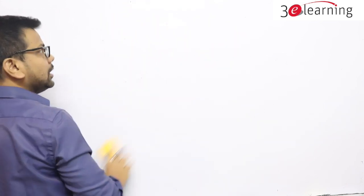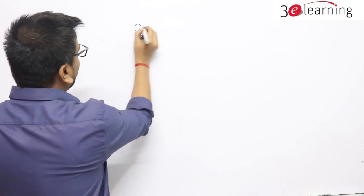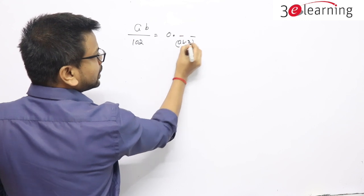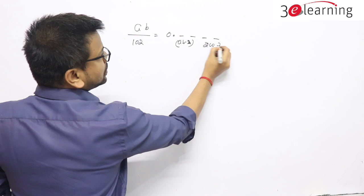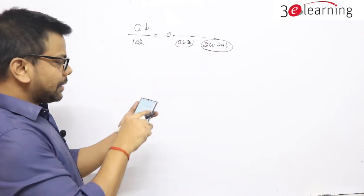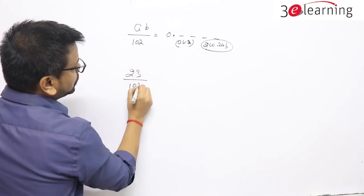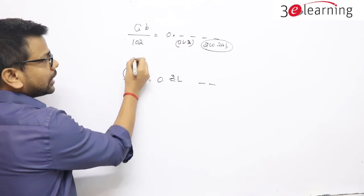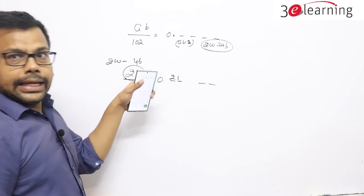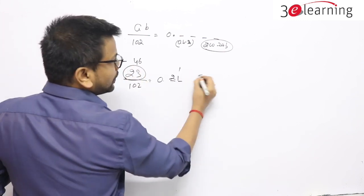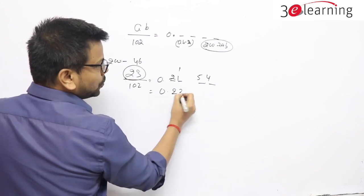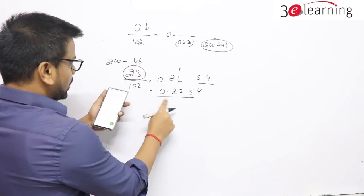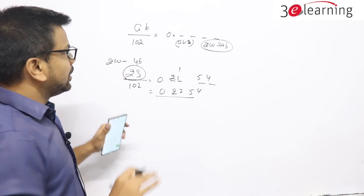I'll tell you the general formation. We work on double digits for now. If you want to know what happens beyond double digits, I'll tell you later. If you want to divide AB by 102, here we write AB minus 2, and here we write — in double digits — 200 minus 2×AB. That's all. Let me ask a normal question: 23 divided by 102 — 0.point double-digit double-digit. 23 minus 2 is 21, double it gives 42, 200 minus 42 is 158 — so 0.2254 approximately. Checking: 23 divided by 102 is 0.2254.